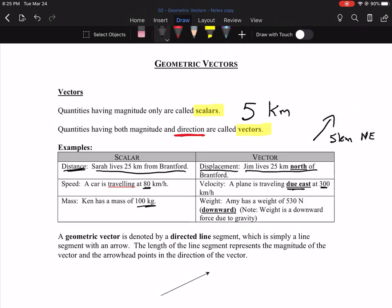Another example of scalar is mass. Ken has a mass of 100 kilograms. But weight is something different, and that might be a new concept for some of you, is that weight is how much you're being pulled down. So Amy has a weight of 530 newtons downward. The weight includes what direction you're being pulled.